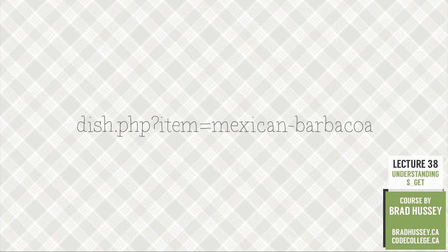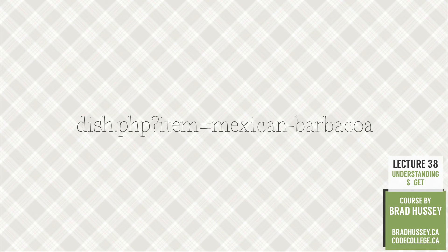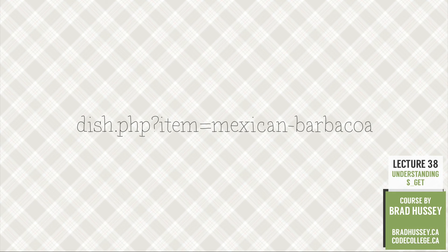Mexican-barbacoa is the value of the variable item. That URL will navigate to dish.php, which we haven't created yet, and the GET collection will create a variable called item with the value of Mexican-barbacoa. We can then use that value to do something specific on our dish.php template.